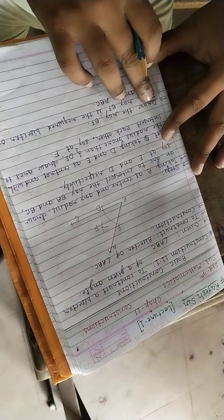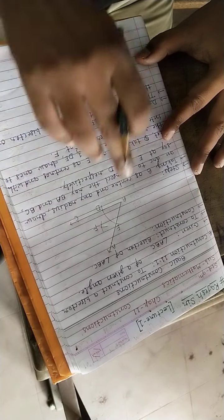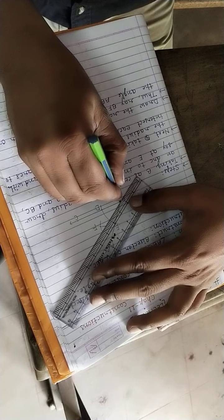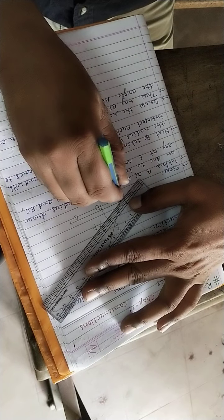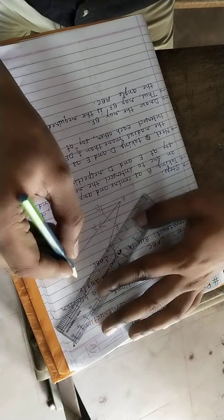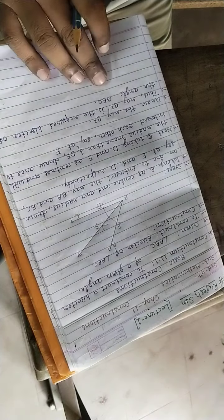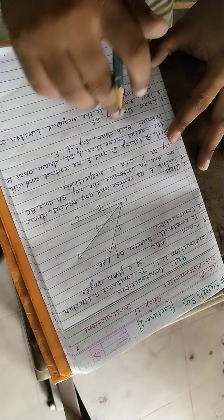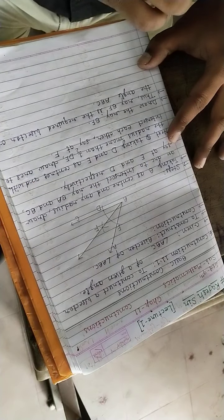Now next, what to do? Draw the ray BF. Ray BF we have to draw, means initial is B and towards F. This ray BF is the required bisector of the given angle ABC.